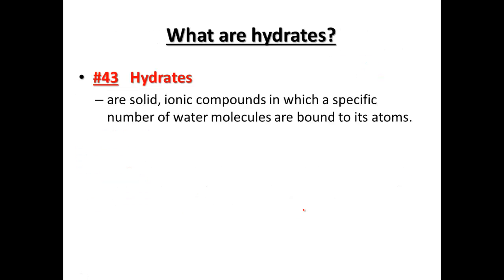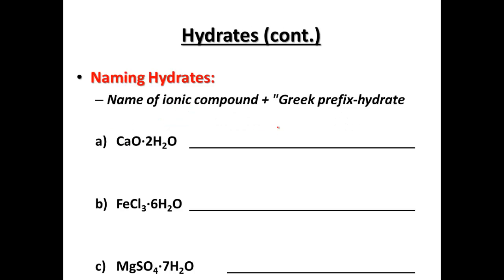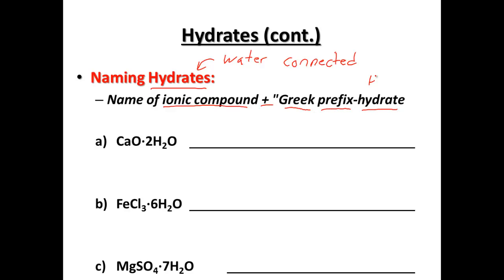Hydrates are solid ionic compounds in which a specific number of water molecules are bound to their atoms. Our first step is naming hydrates. Hydrates mean that there's water connected. So we're going to use our naming of ionic compounds plus a Greek prefix and then 'hydrate' for how many waters we have attached. A dot here shows the connection between the waters and the compound.